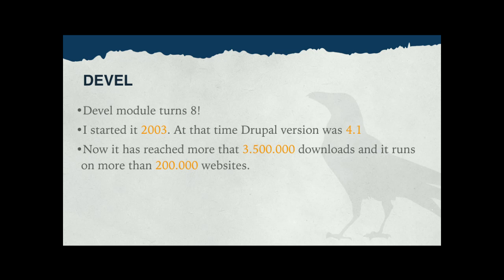So Devel started in 2003. It turns 8 — meaning version 8 — coming out this week. It's quite an old project, started just a little while after Dries released version 1, which was January of 2001. It has been ported and used many, many times over the years. Downloads: 3.5 million. And 20,000 sites report back that they're using it, despite us recommending it be disabled on production sites — they're all stage and dev, but they're still reporting their usage.